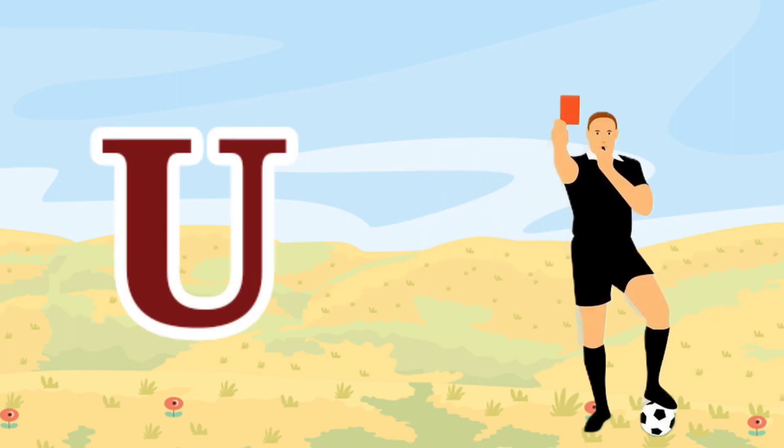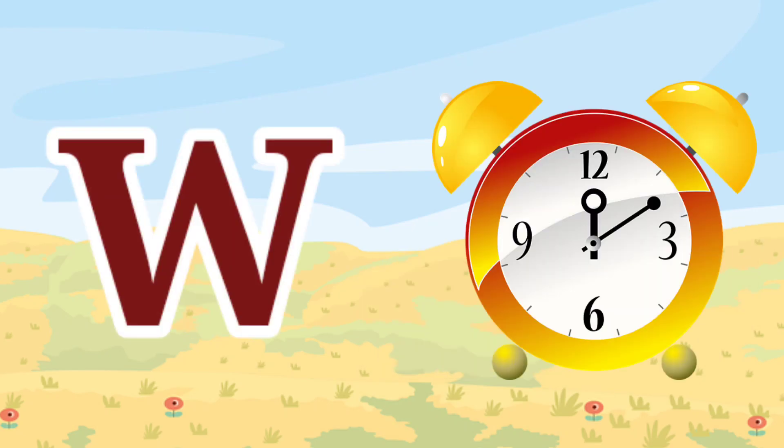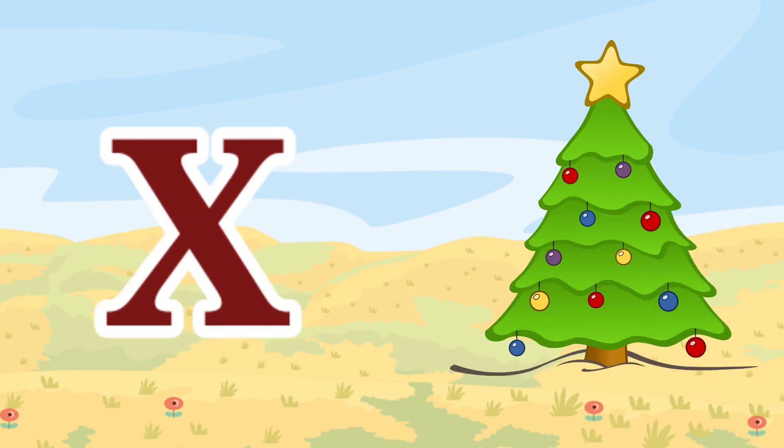U for umbrella. V for violet. W for watch. X for xmas tree.